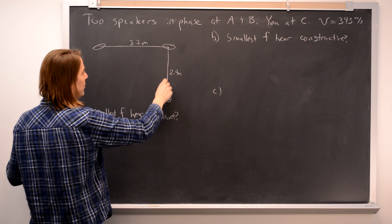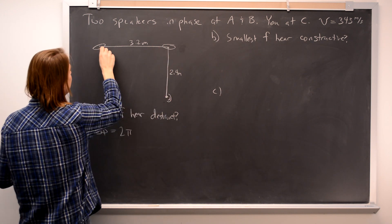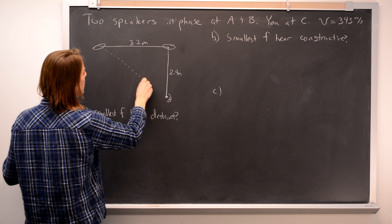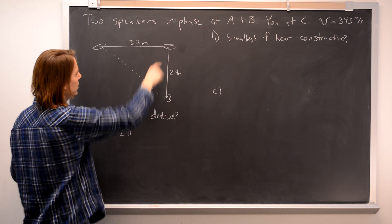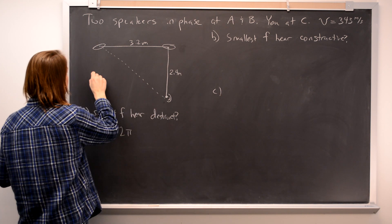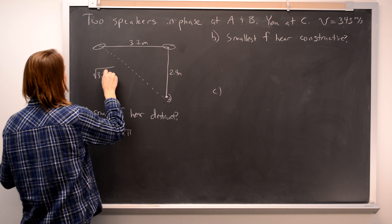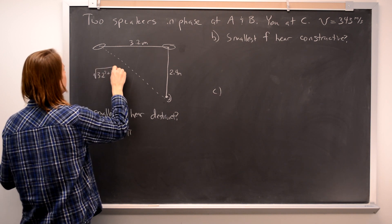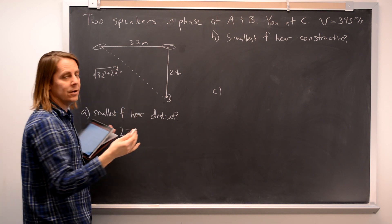So this one is straight down. We know that one is 2.4 meters. This one, we have to consider the right triangle. Pythagorean theorem.